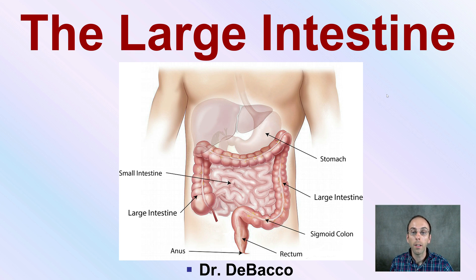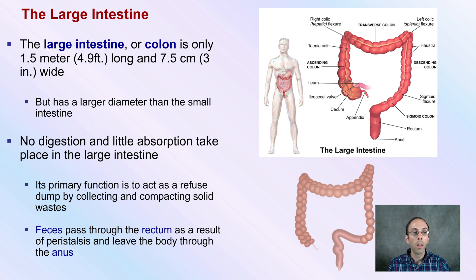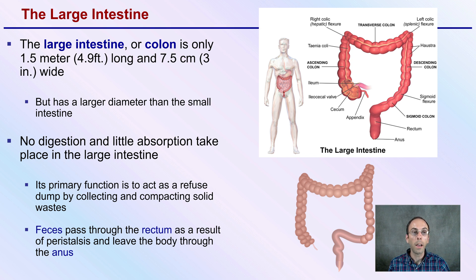Here we're going to be looking at the large intestine in some detail. Remember, it's a large intestine because of its diameter, not because of its length. Starting with the large intestine in general, or the colon as it might be referred to, it's only about 1.5 meters or 4.9 feet long and 7.5 centimeters or 3 inches wide. It has a larger diameter than the small intestine — the small intestine might be longer, but large and small refer to a comparison of diameter.